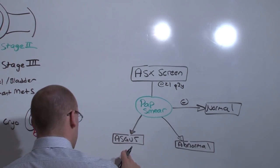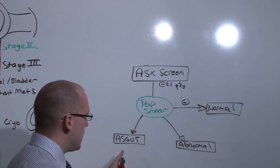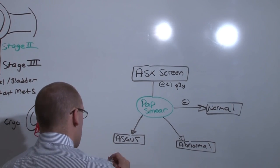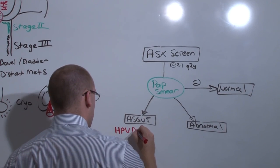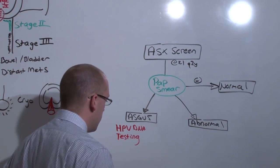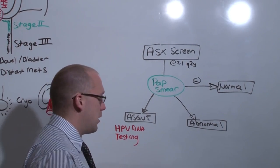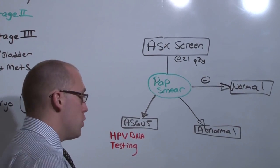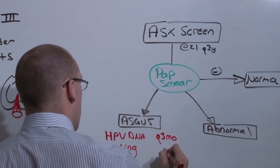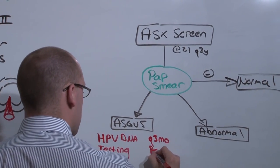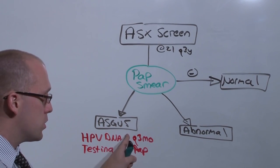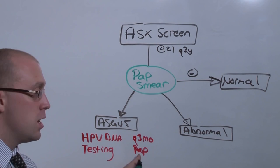Let's first talk about ASCUS. If you found atypical cells, but it's not frankly abnormal, you have two options. The first is to do HPV DNA testing to find out if she's got high-risk HPV. If she does, you can count it as abnormal. Or you can simply take a conservative approach and bring her back every three months to repeat the pap smear.